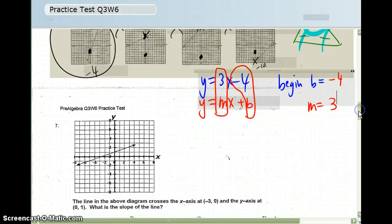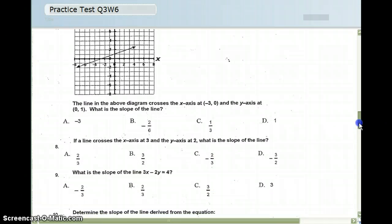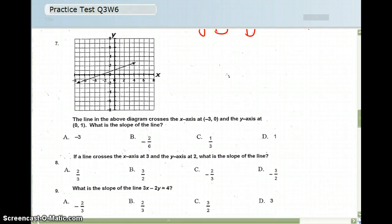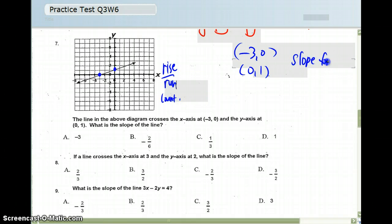Number 7, we're looking for the slope of this line, and here's a picture of it. They say that it crosses at negative 3, 0, and it crosses at 0, 1, which is exactly the dot here and the dot here. I could again do rise over run and count, or if I want to actually use the slope formula, I could do that as well. So let me show you both ways.